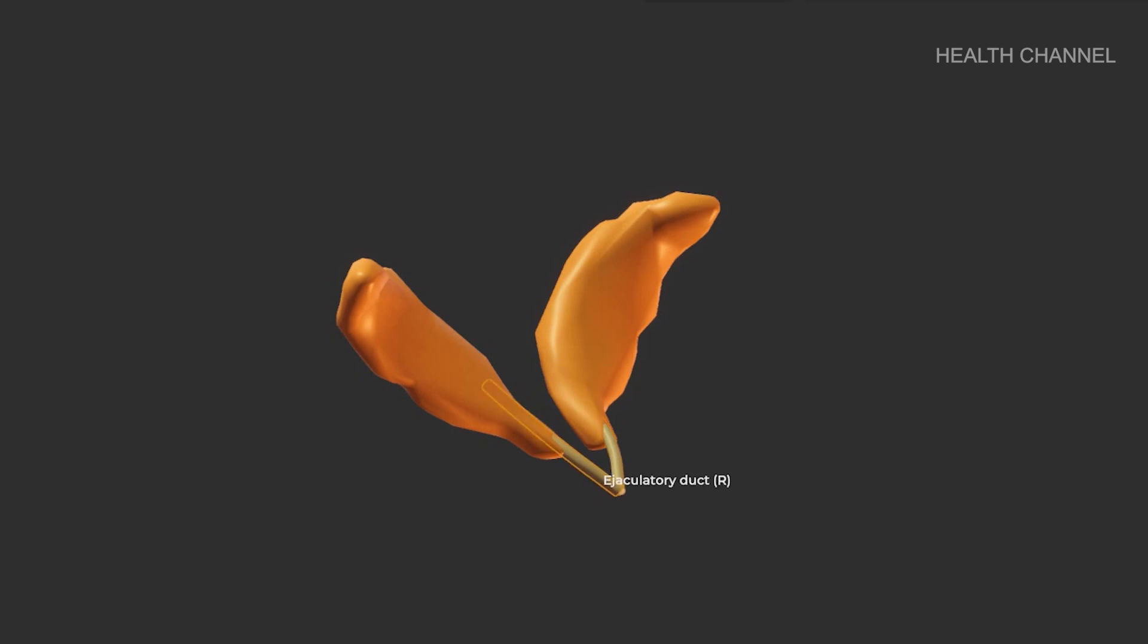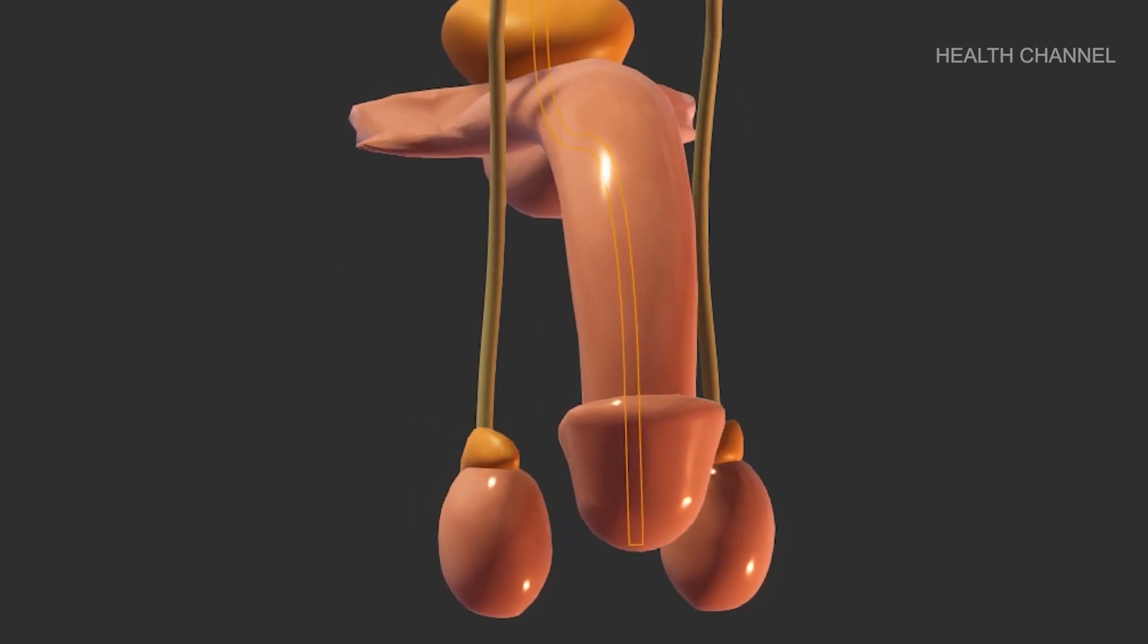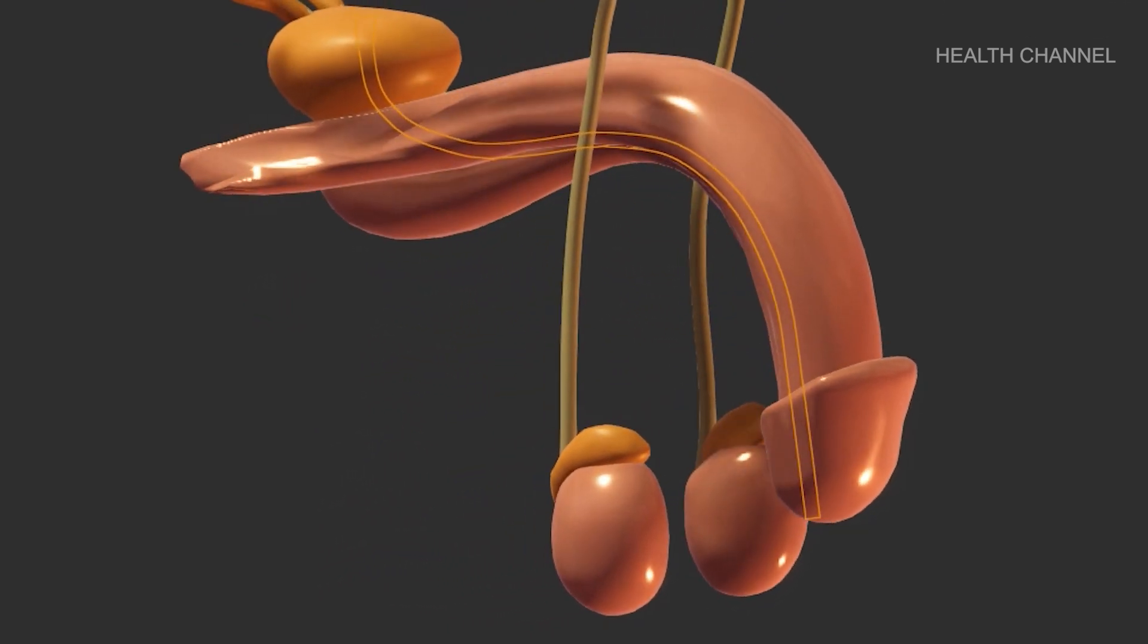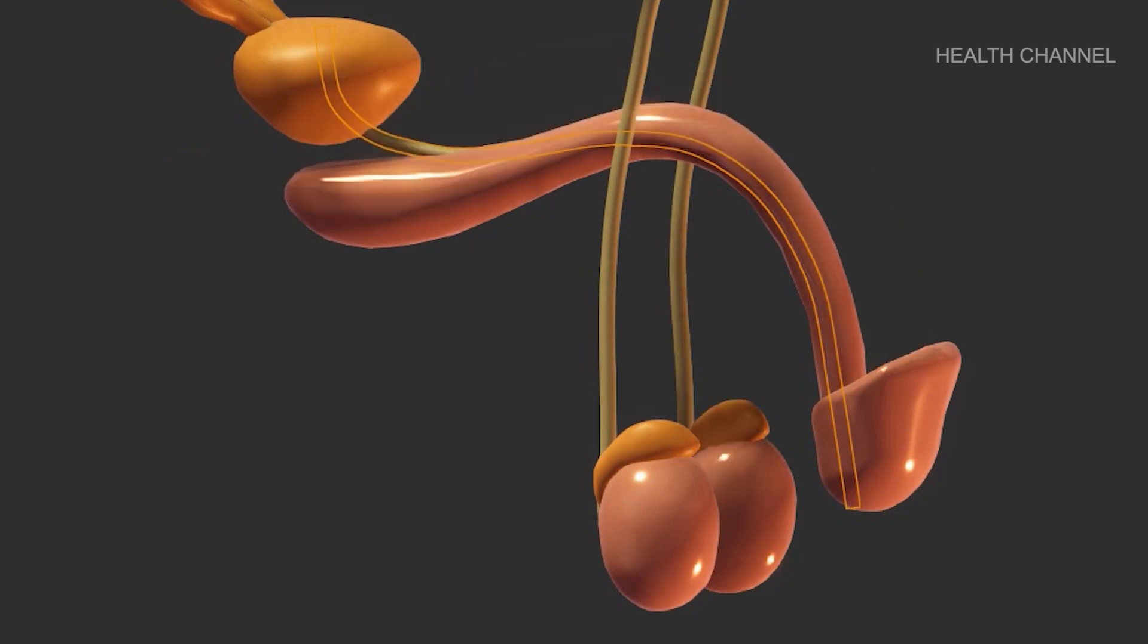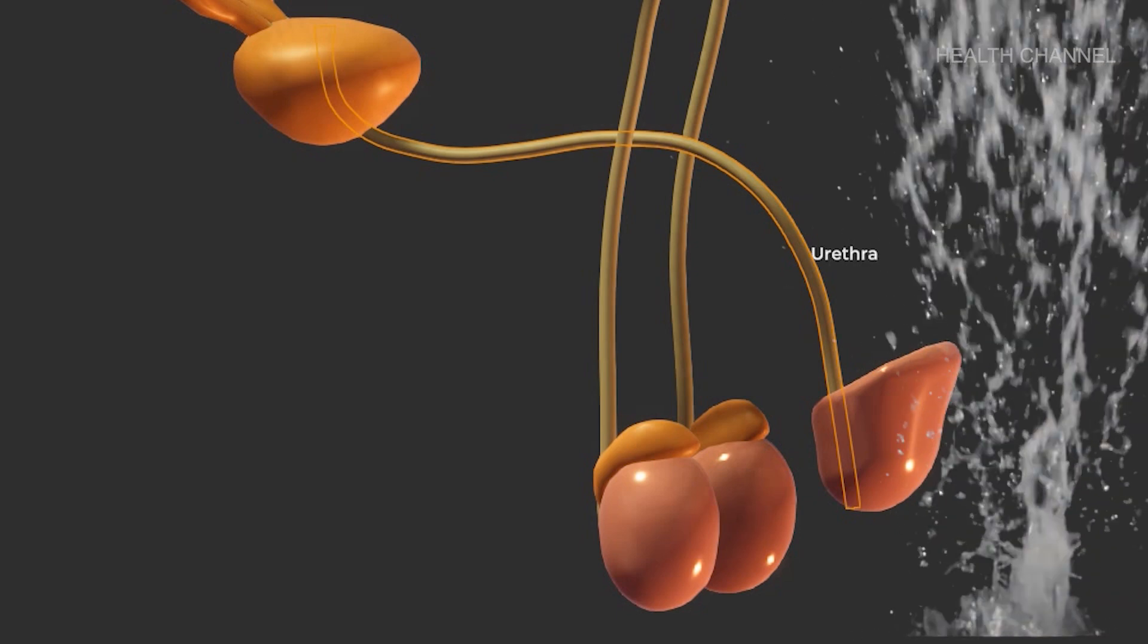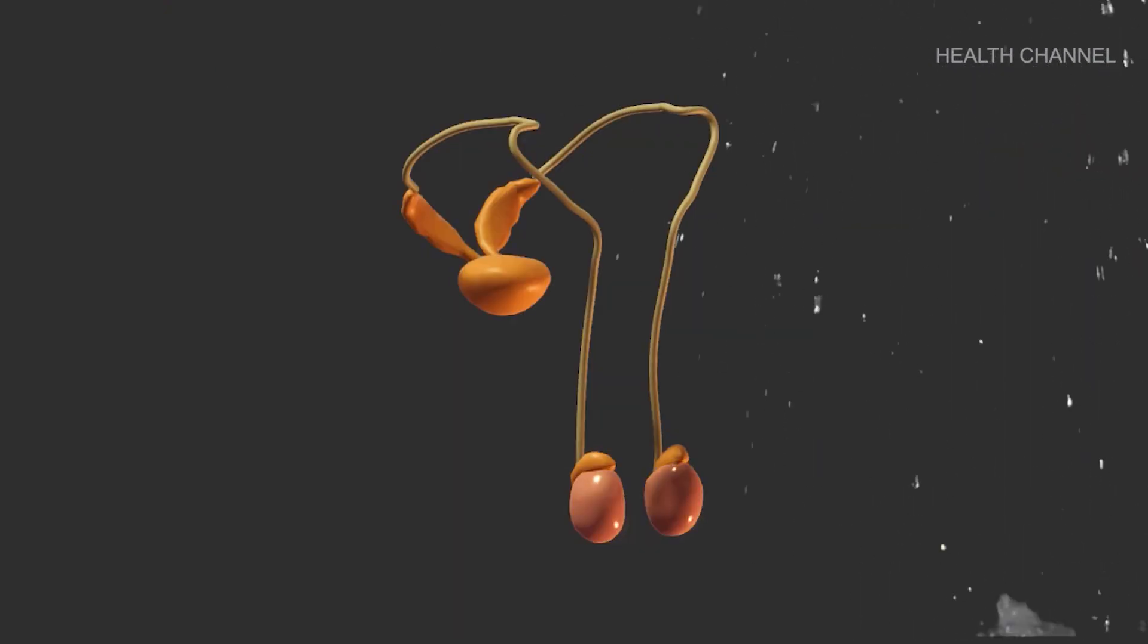The ejaculatory ducts empty into the urethra. The urethra is the tube that connects your bladder to the exterior of your body. When you experience orgasm, it also has the added function of ejaculating semen. In males, when the penis is erect during sex, the flow of urine from the urethra is restricted, allowing only semen to be ejaculated during climax.